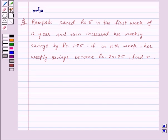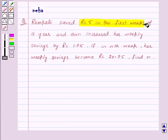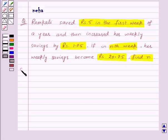Hi and welcome to the session. I am Neha and I'm going to help you with the following question. The question says Ramkali saved rupees 5 in the first week of a year and then increased her weekly savings by rupees 1.75. If in nth week her weekly savings become rupees 20.75, find n. Let's see its solution.